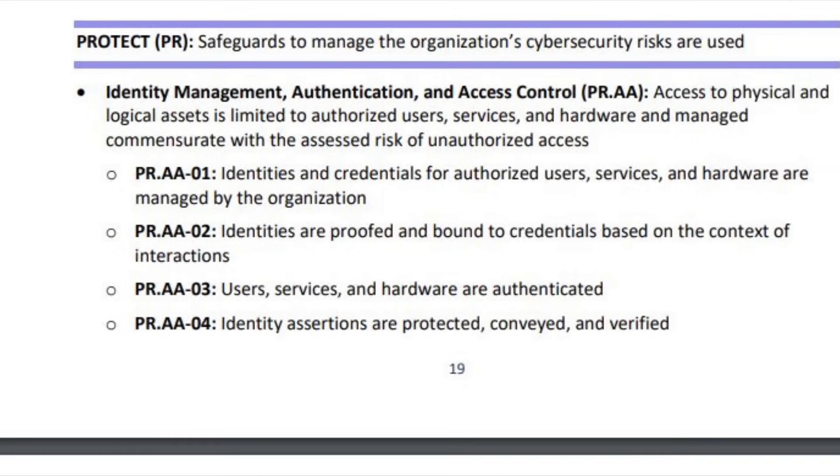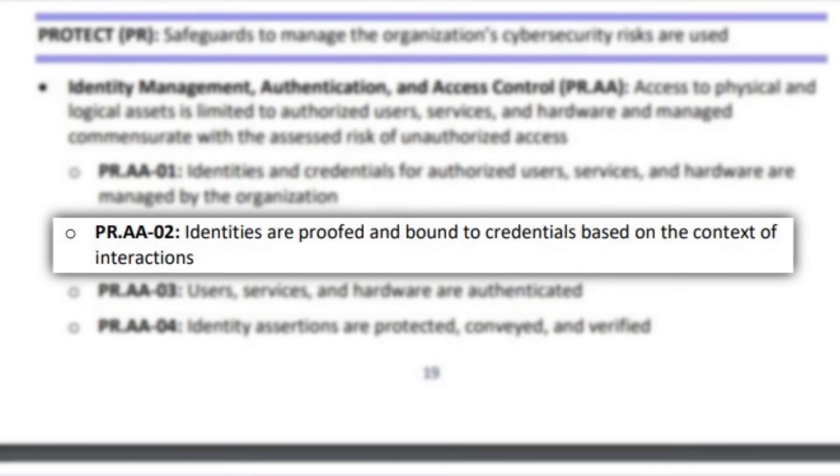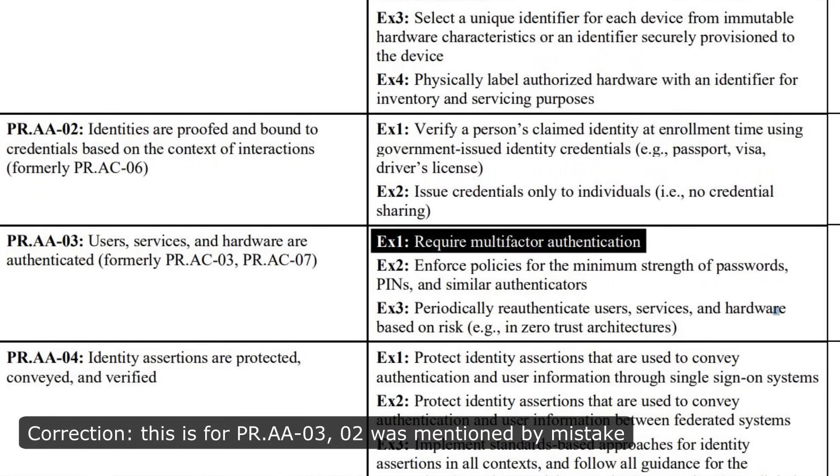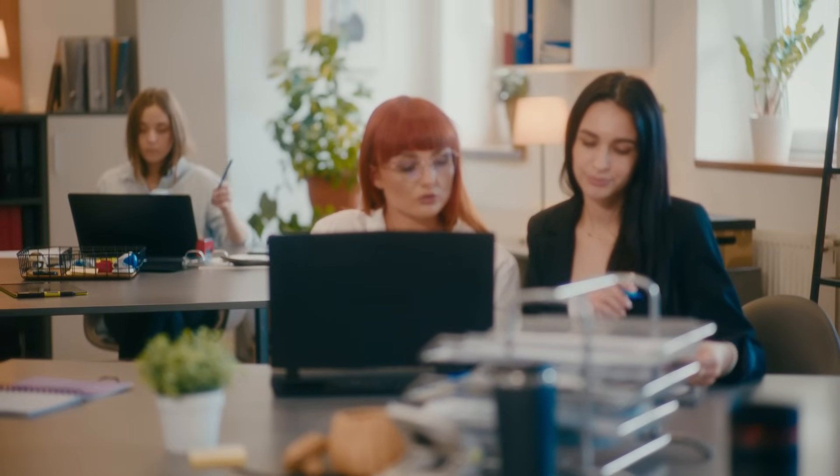The examples provide clarity the same way context helps you understand an unfamiliar word. For example, PR.AA-02 — that's the Protect function, Access and Authentication category, which is a new category — states: identities are proved and bound to credentials based on the context of interactions. You might ask what that means, but one implementation example they provide states: require multi-factor authentication. That is prescriptive and very clear. Depending on the user and resource they're trying to access, the level of authentication changes to be appropriate — like username and password on the work network, but multi-factor authentication when remote. It's based on the context of interactions.